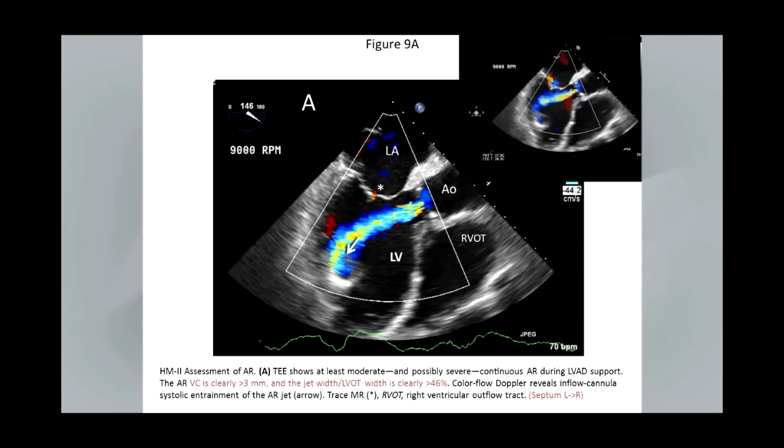This is an example of significant aortic regurgitation after activation of the LVAD. This shows graphically the blind loop of flow that can occur: aortic regurgitation is drawn into the LVAD, pumped out to the aorta, and then right back down to the LVAD. This causes significant volume loading of the ventricle without as much augmented forward flow as you would like.